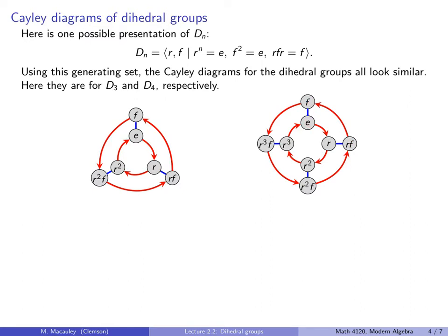We can replace this relation with any relation that describes how this force cycle goes together. So we could say R, F, R, F is the identity. Or we could say R, F equals F, R inverse. Or R, F equals F, R cubed.